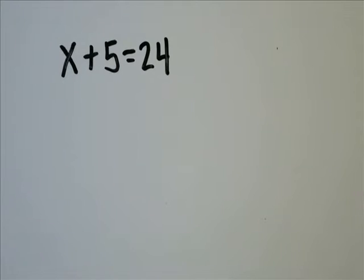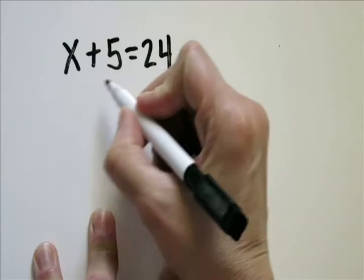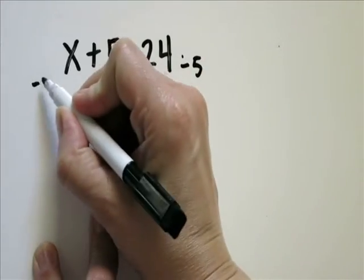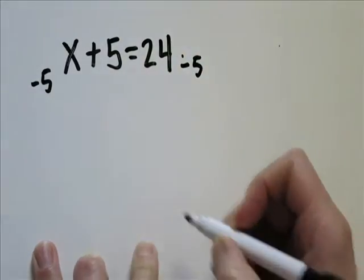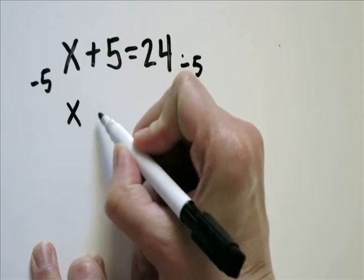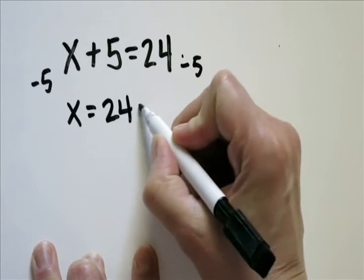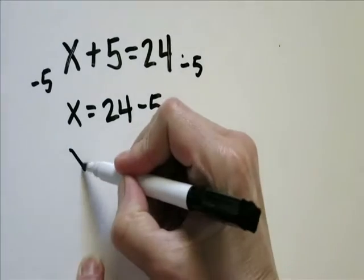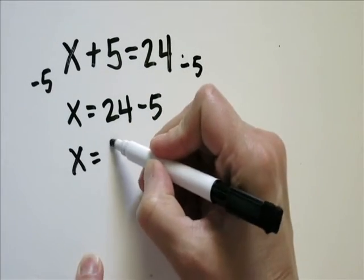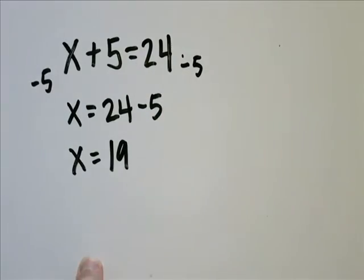I'm going to start with problem number 16, x plus 5 equals 24. I'm going to start by minus 5 from each side, which is going to give you x equals 24 minus 5. 24 minus 5 is 19. x equals 19.